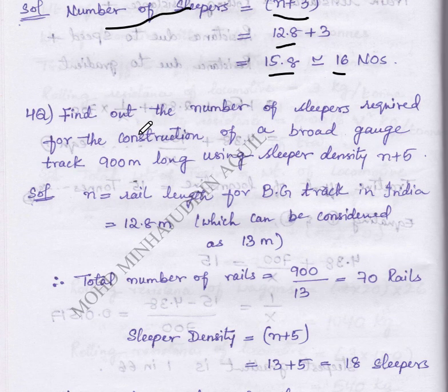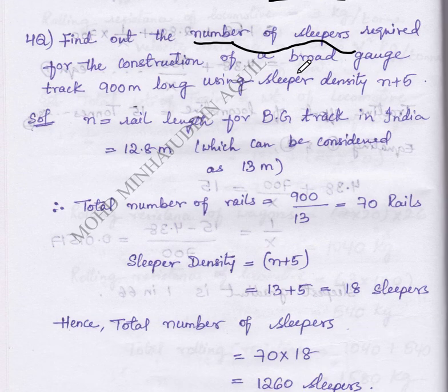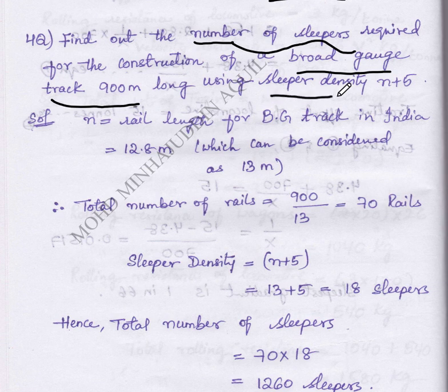Next problem: calculate the number of sleepers required for construction of a broad gauge 900 meter long track using sleeper density as n plus 5. n equals rail length, 12.8, which is always written as 13 meters.